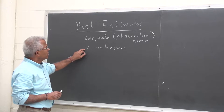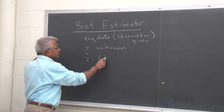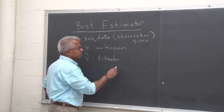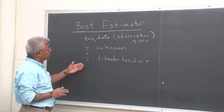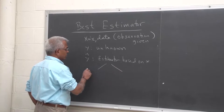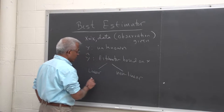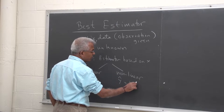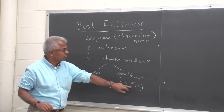Y is unknown and we want to estimate y. So y-hat is an estimator for y based on the data. It will be a function of x — y-hat will be a function of x. In general we can look at linear estimators and non-linear estimators. In the linear case, y-hat will be simply ax; in the non-linear case, y-hat will be some function phi of x.